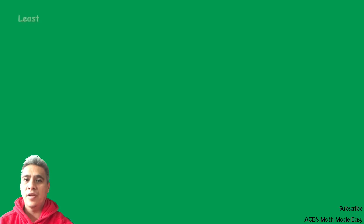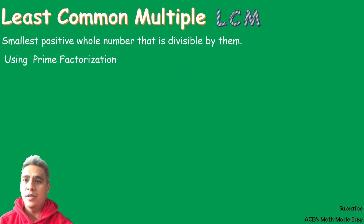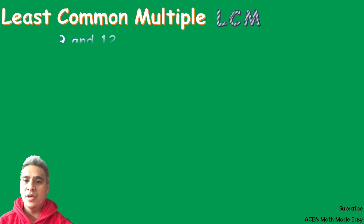Our topic for today is about least common multiple, or LCM. LCM is the smallest number that is divisible by the given numbers. We are going to use the prime factorization method to get the LCM. Our examples here are exactly the same examples we used in Greatest Common Factor, because I want you to see that the difference of LCM from GCF is only in the last step.